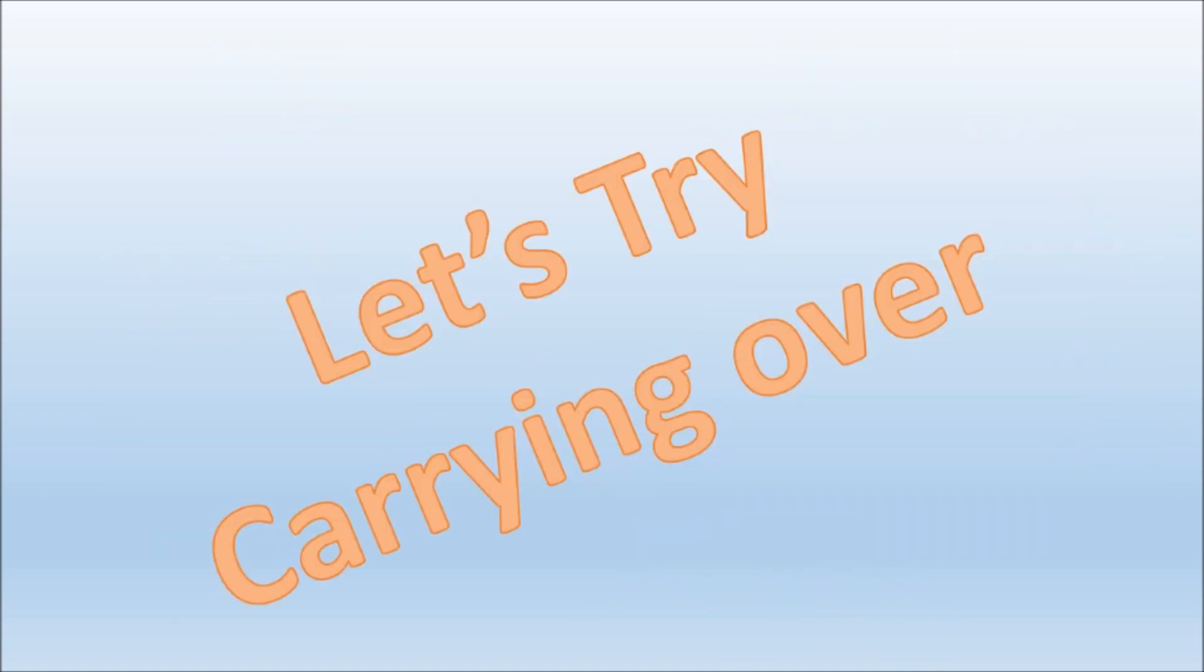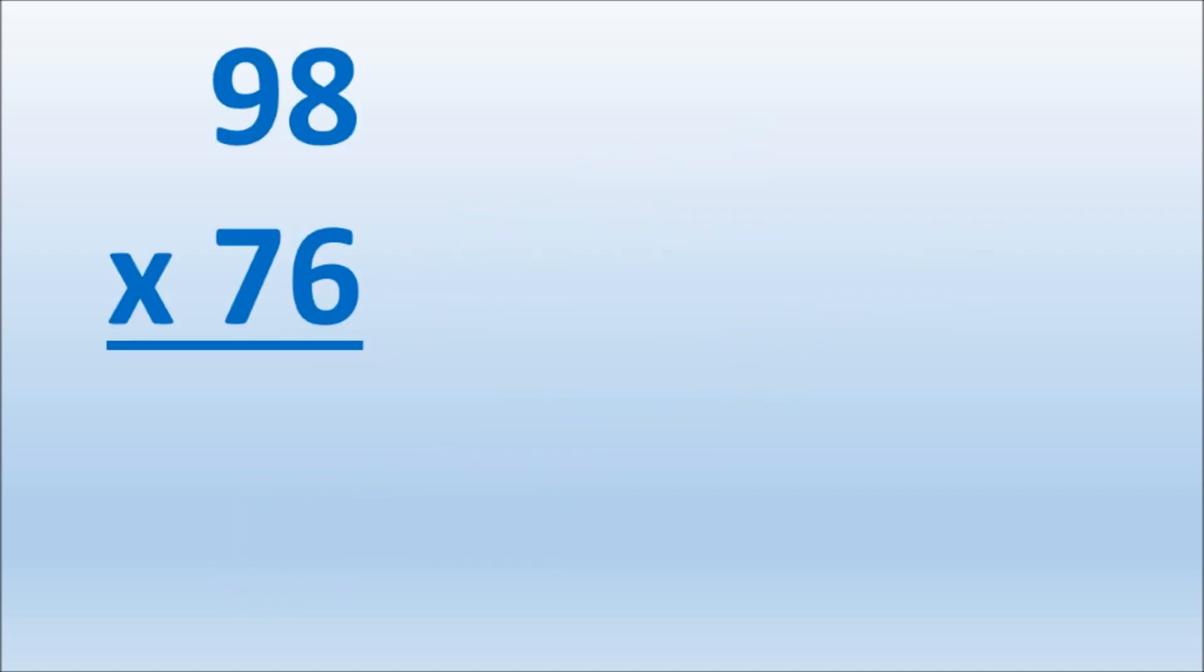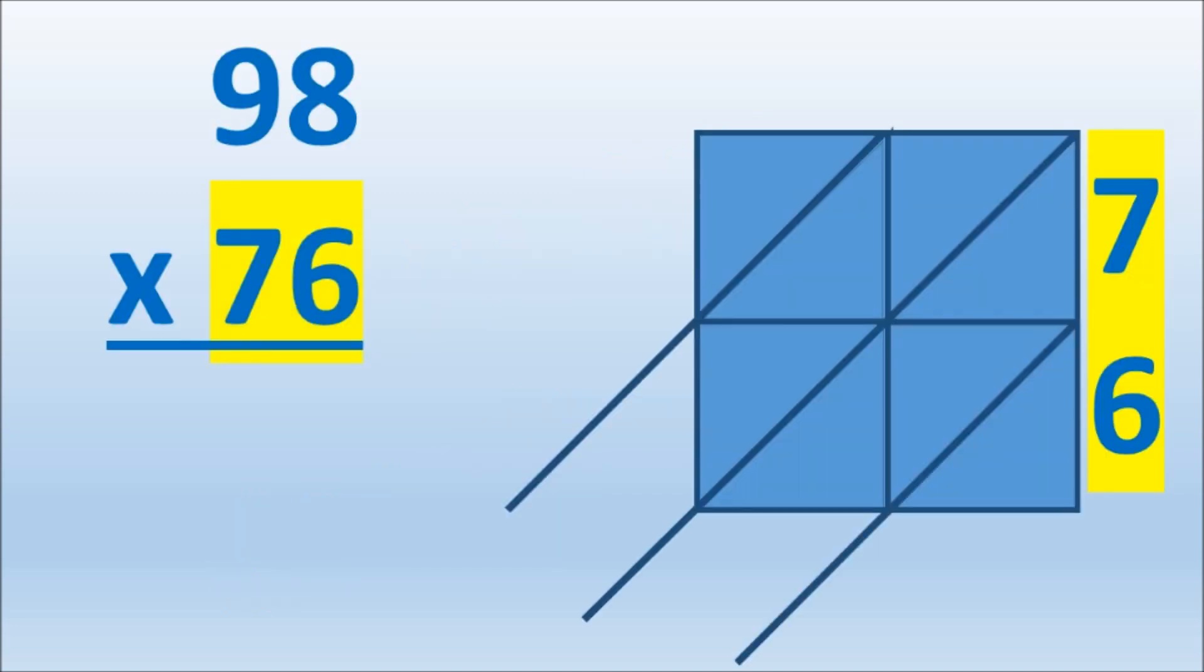Now let us try it with numbers that carry over. Again place the bottom number along the side of the lattice and the top numbers along the top. 8 times 6 is 48. 9 times 6 is 54. 7 times 8 is 56. 9 times 7 is 63.